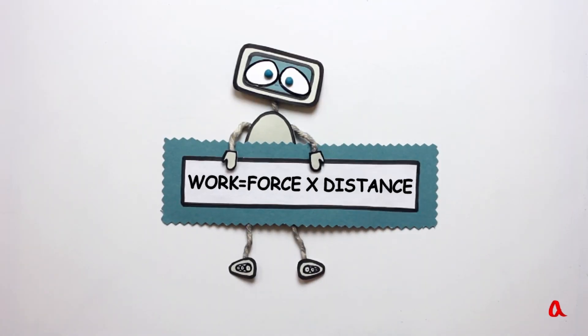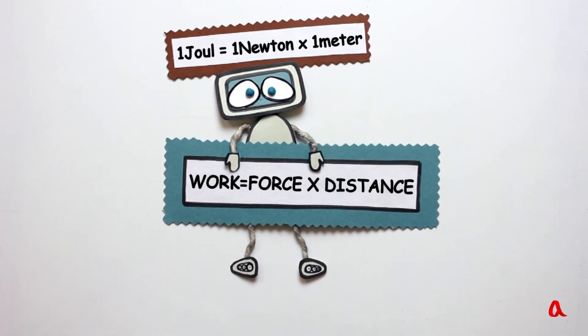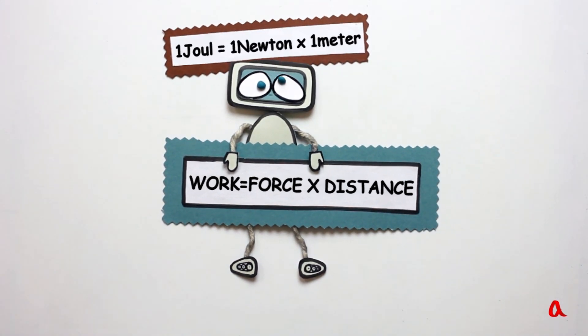We can write it down. Work is force multiplied by displacement. A unit of work is called a joule. One joule work is carried out by one Newton force acting along one metre distance.